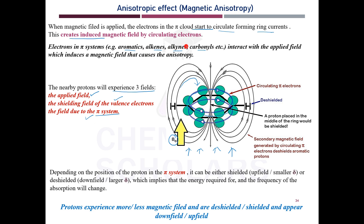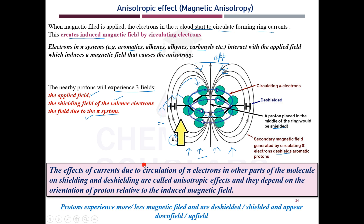This pi system is generally observed in aromatic compounds, alkenes, alkynes, and carbonyls — that is why the magnetic anisotropic effect is observed in these compounds. In this diagram, any proton lying in one region experiences a field opposite to the applied magnetic field, while arrows in another region are in the same direction as the applied field. Wherever they are aligned, that part is deshielded; wherever they are opposite, that part is shielded.